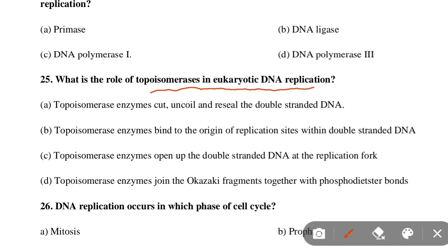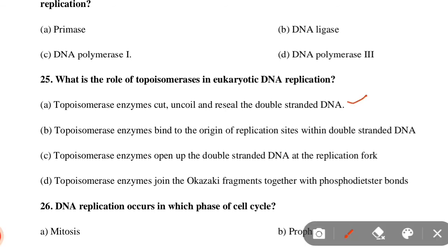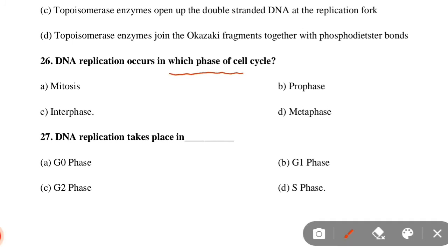Next MCQ: What is the role of topoisomerase in eukaryotic DNA replication? Option A: Topoisomerase enzymes cut, uncoil, and reseal the double-stranded DNA. Option B: Topoisomerase enzymes bind to the origin of replication site. Option C: Topoisomerase opens the double-stranded DNA at the replication fork. Option D: Topoisomerase enzymes join Okazaki fragments with phosphodiester bonds. Option A is correct — topoisomerase enzymes cut, uncoil, and reseal the double-stranded DNA.